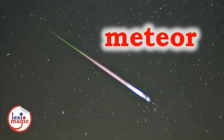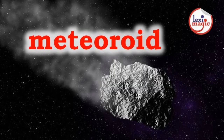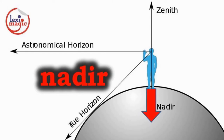Meteor is a rock that enters the earth's atmosphere and appears to be shining due to the heat produced by friction. Meteoroid is a former stage of a meteor before it enters the earth's atmosphere. Nadir is a point on the celestial sphere that is located directly below the observer.